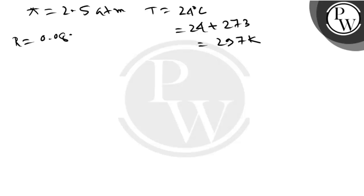Here π is given as 2.5 atm, T = 24°C = 24 + 273 = 297 K, R = 0.0821 L·atm·K⁻¹·mol⁻¹, and value of C we have to find.